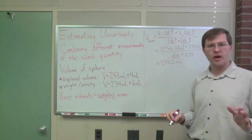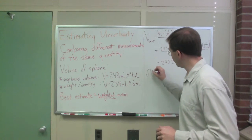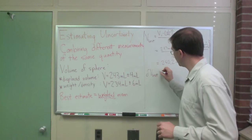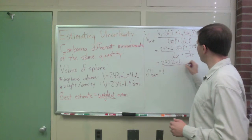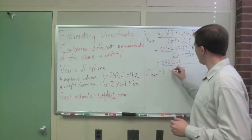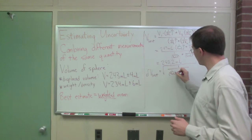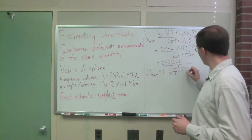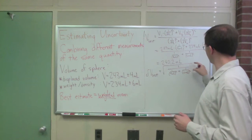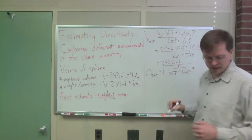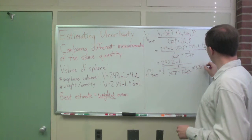I also want to know how much I can trust this estimate now that I've combined these two things. And so my delta V best, this one is actually pretty nice, it's just the square root of that inverse of 1 over 4 milliliters squared plus 1 over 6 milliliters squared. Square root of all that comes out to be, and again, I put this all together, 3.328 milliliters.